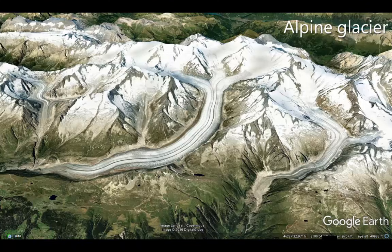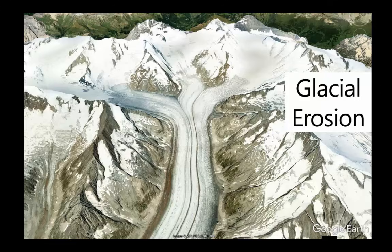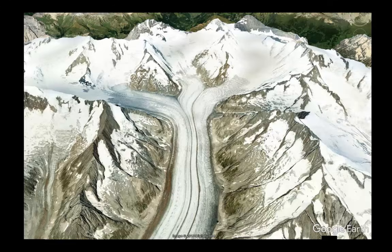And just like streams, glaciers erode material from near their source, transport rock and sediment downslope, and deposit much of that material where they end. In areas with present-day glaciers, erosion forms steep-walled, bowl-shaped depressions known as cirques at the head of valley glaciers. Adjacent glacial valleys are typically separated by sharp, knife-edged ridges known as arêtes.